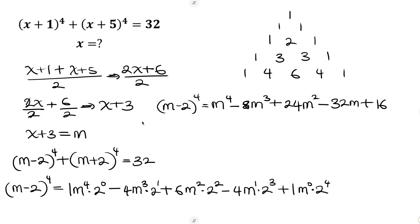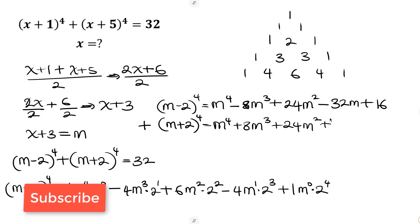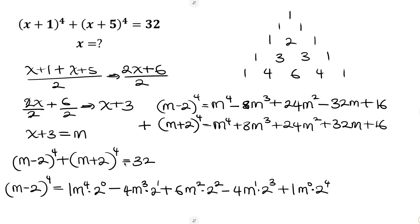Now for (m plus 2)^4: we have the same coefficients, but since we have plus here, we don't alternate the signs — they all remain plus. So this gives m^4 plus 8m^3 plus 24m squared plus 32m plus 16. Adding the two expanded expressions together, this sum is equal to 32.